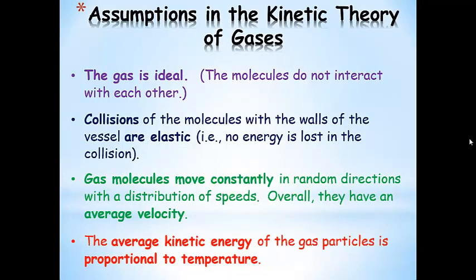Let's go through some of the assumptions in the kinetic theory of gases — you do need to know these. First, this only works if the gas is ideal, meaning molecules don't interact with each other. Another assumption is that the collisions of the molecules with the walls of the container are elastic — they bounce off like billiard balls with no energy lost. Gas molecules are also moving constantly in random directions, and they have a distribution of speeds, meaning they don't all have the exact same velocity.